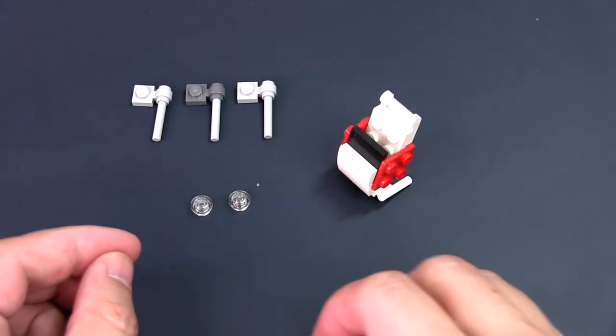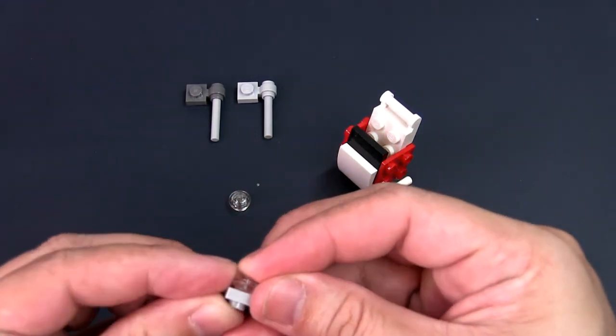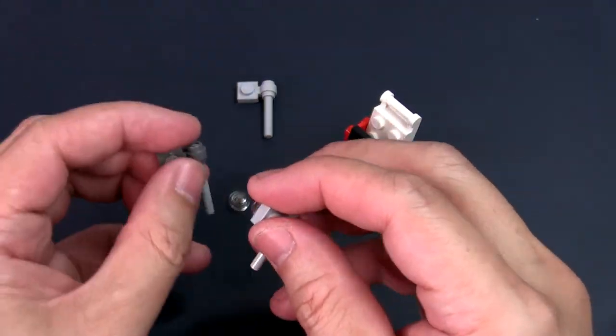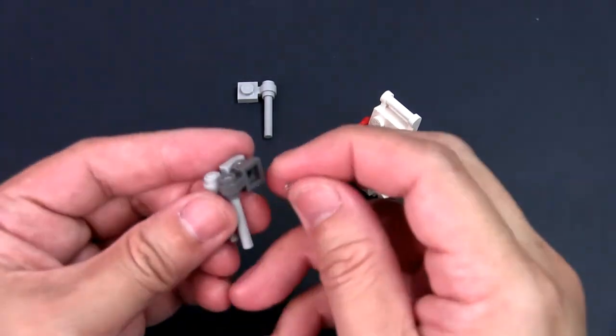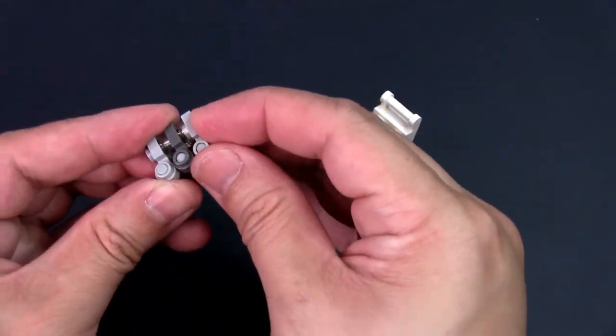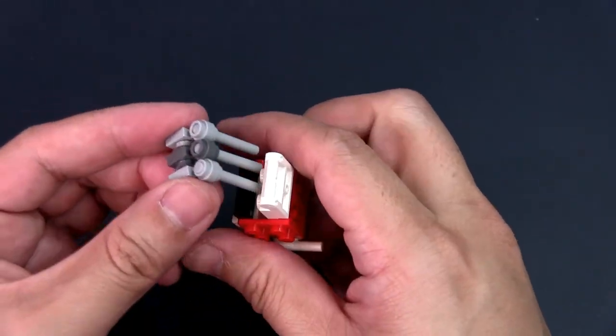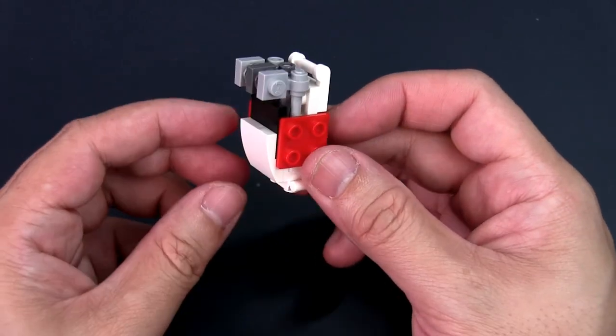You will now take the transparent round studs and use them to secure the three golf clubs together. This is to hold them in place so they don't rattle around and fall out easily. Place the three clubs into the bag and there you have your LEGO golf bag.